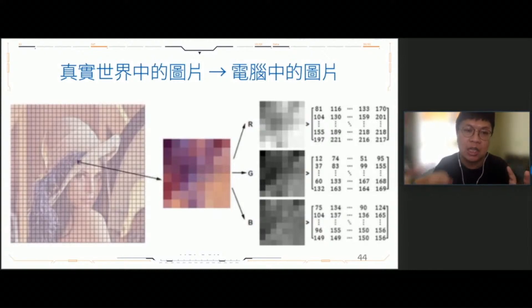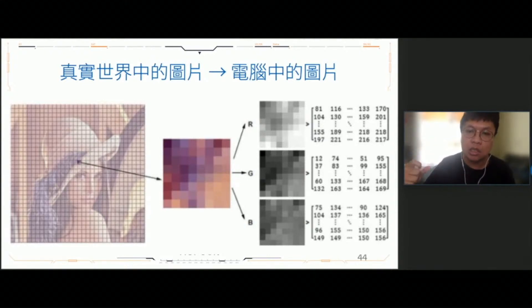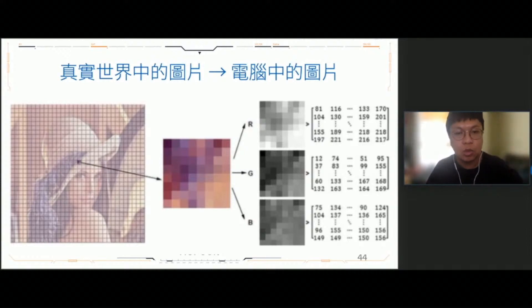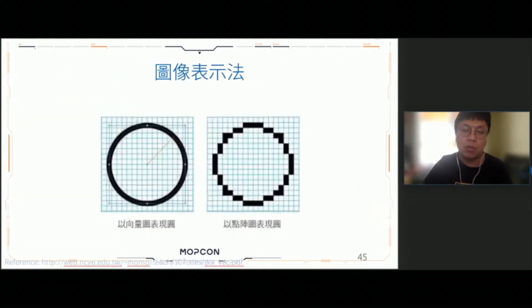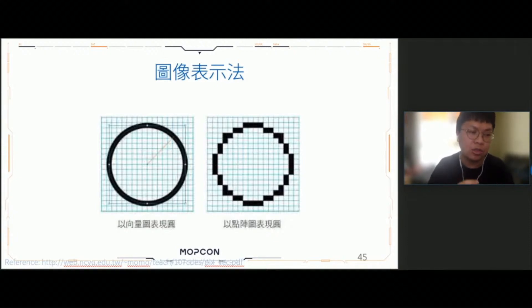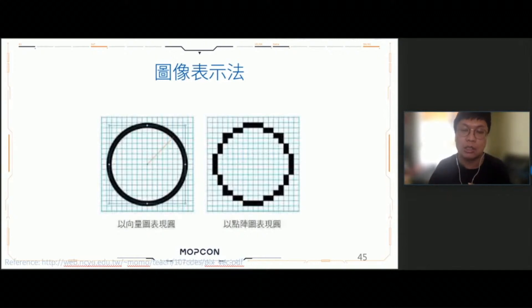真實世界的圖片可能是全彩的或黑白的，這是你眼中看到的世界。可是當這樣的圖片對應到程式當中，它其實會變成一點一點的數字。對於電腦而言，它無法理解一整張圖片所代表的意涵，它能做的事情就是把整張圖片切成一格一格的點陣，再把這些點陣對應成不同顏色。因為一點一點就可以把它想像成數學當中的矩陣，所以對於人類而言我們讀的是一張圖片，對於電腦而言它讀的是一格一格矩陣上面的數字。在電腦當中儲存一張圖片有兩種方法：一種是向量的方法，一種是點陣的方法。